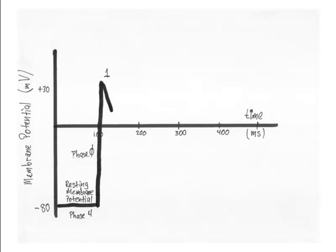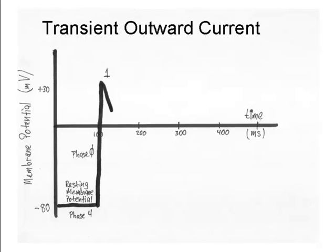Next, the voltage decreases by approximately 20 millivolts over the course of 20 milliseconds. This phase is known as the transient outward current, or phase one.